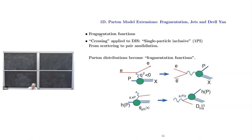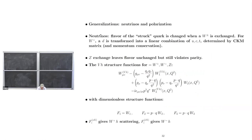We'd have more form factors — more structure functions, the f's. There would be non-parity conserving constructions that wouldn't require the spin. In some sense, the one we got before, just having a W, plays where the photon did in the deep inelastic scattering experiment at SLAC.